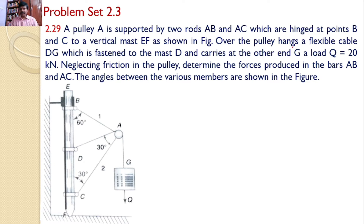Over this pulley hangs a flexible cable DG. DG is a cable which passes over the pulley fastened to the mast at D. One end is connected to the vertical member at D and the other end G carries a load of 20 kN. Neglecting friction in the pulley, determine the forces produced in bars AB and AC. The angles between the various members are shown in the figure.